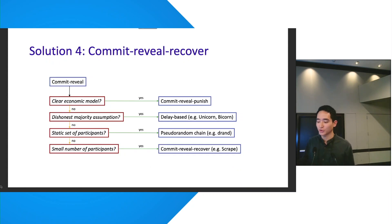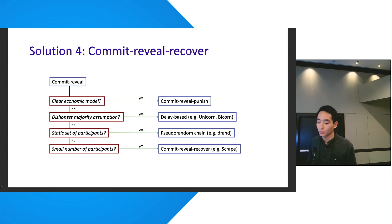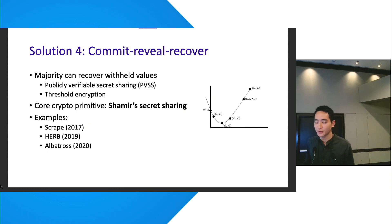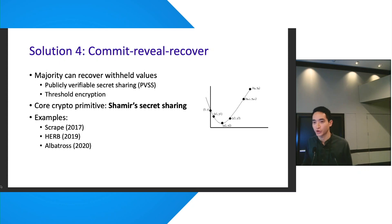Sometimes we need a more dynamic set of participants for a DRB. If we have a small number of participants, we can perform what we call commit-reveal-recover, as in a protocol called SCRAPE. The idea of recovery relies on an honest majority recovering without missing values, with the core cryptographic primitive being Shamir's secret sharing — sharing a polynomial among members of a group.